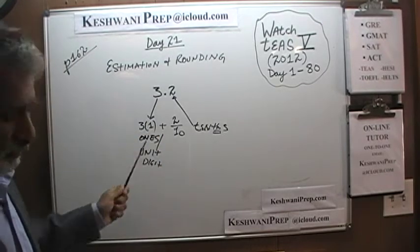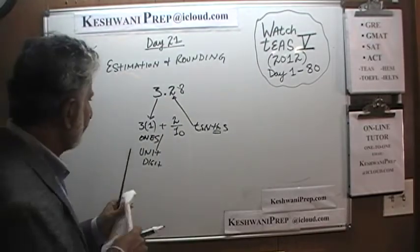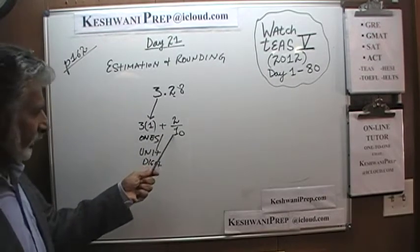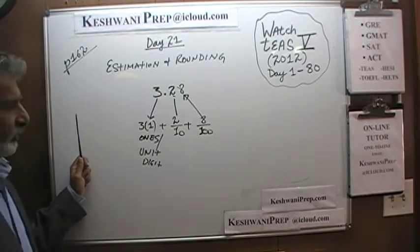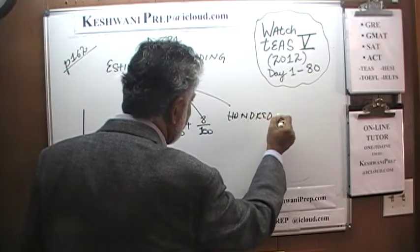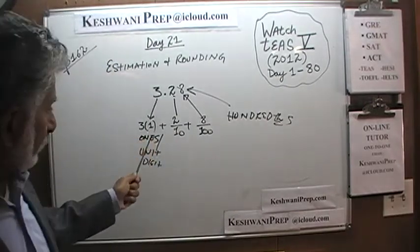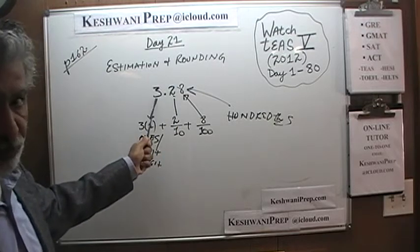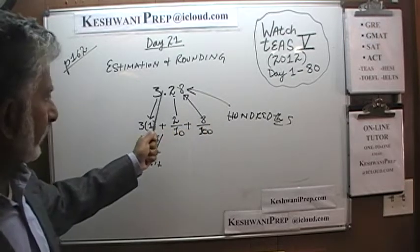What if instead of 3.2 we had 3.28? Now this tells us that this quantity is made up of 3 ones, 2 tenths, and 8 one-hundredths. The 8 is called the hundredths digit — again with a TH — because it tells us how many hundredths we have. So: ones digit, tenths digit, hundredths digit, and so on — thousandths digit, ten-thousandths digit, and so forth.